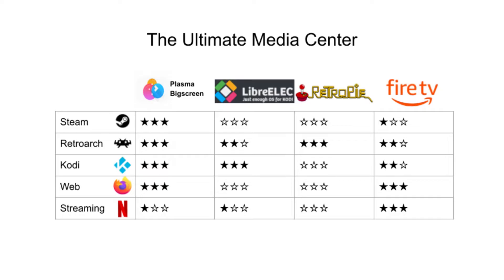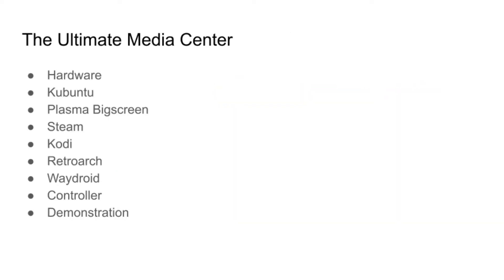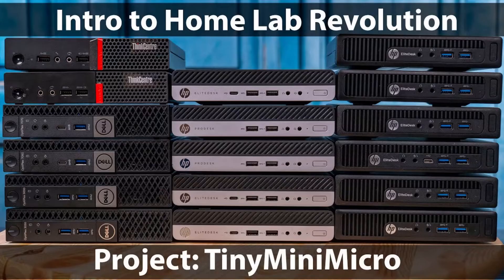The streaming site add-ons for Kodi offer a poor user experience, so what I want to do is take a thin client and install enough OS to run Steam, RetroArch, Kodi, and Firefox, and get other streaming platforms working as well. To do this I want to use Plasma Big Screen, which is KDE's TV interface. In this video we'll choose the right hardware, install Kubuntu, then install Plasma Big Screen and all the other components such as Kodi, Steam, RetroArch, and maybe even Waydroid.